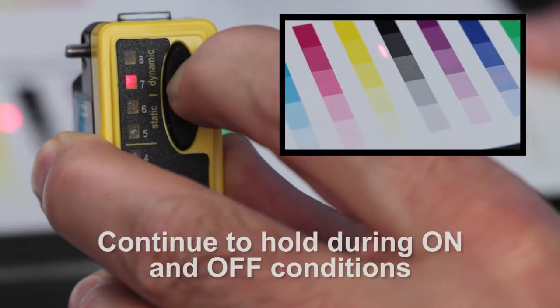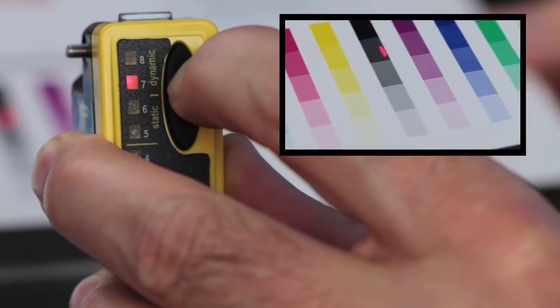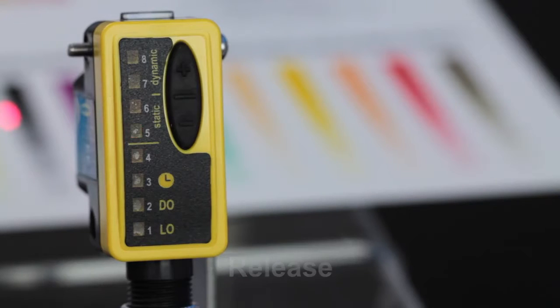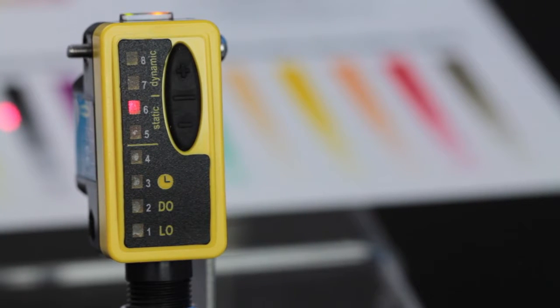Continue to hold the Plus button while on and off conditions pass by the sensor, which we're simulating with this color card. Release the button after a sampling of switching conditions have been logged by the sensor.